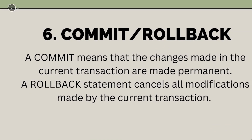Next we have the COMMIT and ROLLBACK keywords. COMMIT means the changes made in the current transaction are made permanent — the transactions up to that step are stored permanently in the database. A ROLLBACK statement cancels all modifications made by the current transaction. For example, if you delete a record and then execute ROLLBACK, the deleted record will reappear in the table. COMMIT and ROLLBACK work opposite to each other and are very important from both the interview and execution point of view.